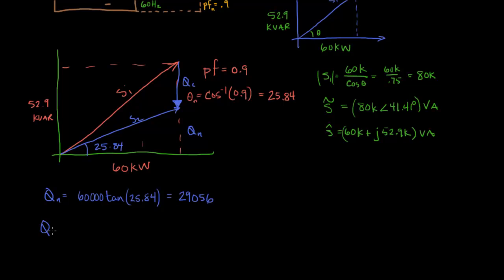QC, then, is the difference between the original Q and Q nu. So it's going to be 52.9K minus 29K, which equals 23858.